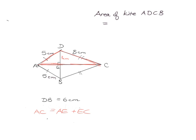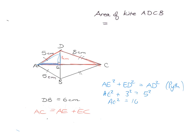That is helpful because AE is sitting in a right-angle triangle and EC is sitting in another right-angle triangle, so we can use Pythagoras to find them. Starting with AE: AE² + ED² = AD². That's our hypotenuse. So AE² + 3² = 5², meaning AE² = 25 − 9 = 16, and therefore AE = 4.